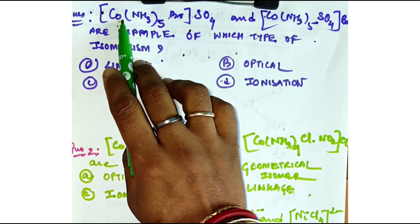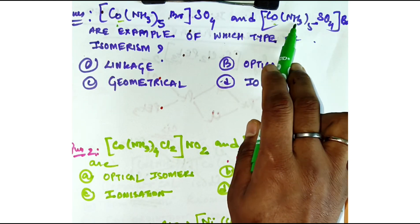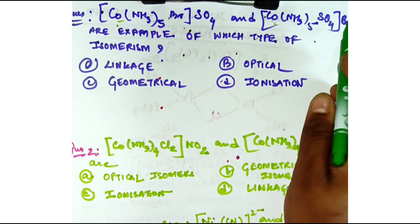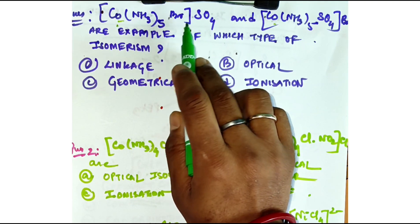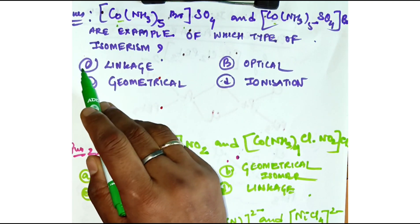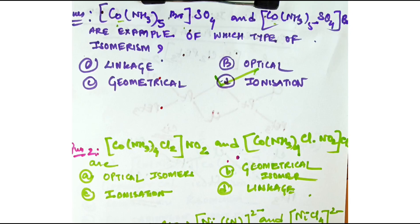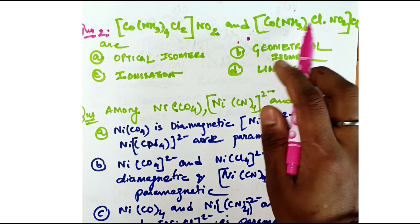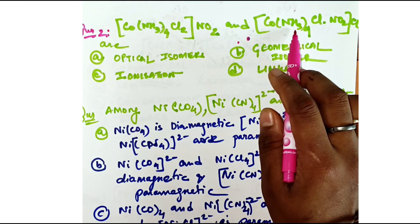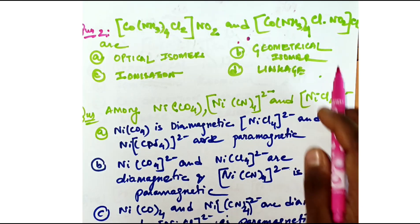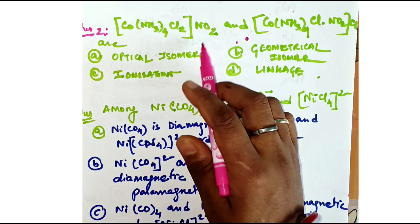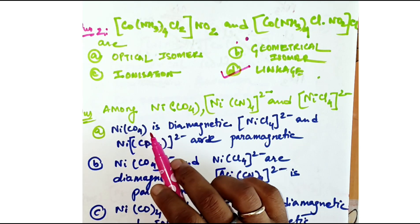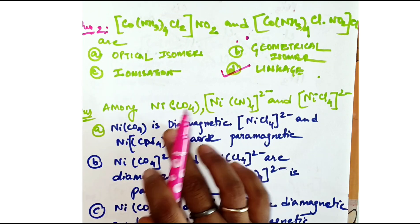Another question: [Co(NH₃)₅Br]SO₄ and [Co(NH₃)₅SO₄]Br — the bracket (coordination sphere) has changed, with sulfate and bromide exchanging positions, so this is ionization isomerism. For [Co(NH₃)₄Cl₂]NO₂ and [Co(NH₃)₄ClNO₂]Cl — whenever there is a nitro group, it forms linkage isomerism because NO₂ can also give the ONO group.